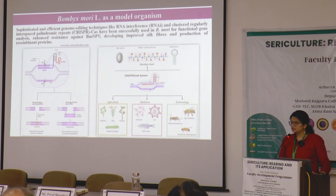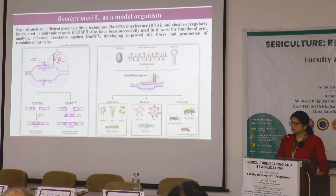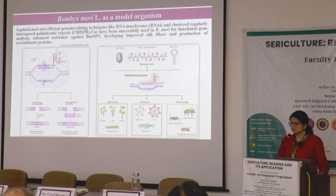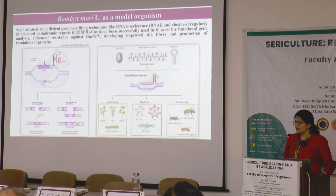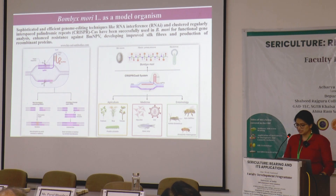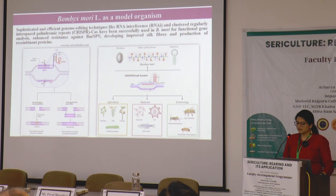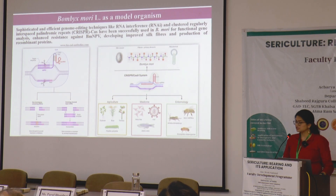CRISPR artificially synthesized guide RNAs match the DNA sequence of interest, and Cas9, the genetic scissors, targets that particular region and cleaves it. The second figure shows the most important current applications of CRISPR-Cas9 in agriculture, medicine, and entomology, and also a simplified representation of its applications performed in Bombyx mori.